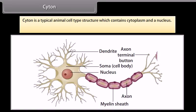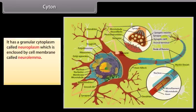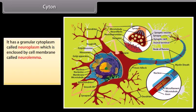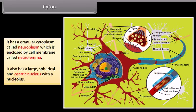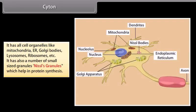The cytone is a typical animal cell-type structure which contains cytoplasm and a nucleus. It is spherical in shape and about 4 to 135 micrometers. It has granular cytoplasm called neuroplasm, enclosed by a cell membrane called the neurolemma. It has a large spherical centric nucleus, and all cell organelles like mitochondria, ER, Golgi bodies, lysosomes, and ribosomes. It also has small-sized granules called Nissl's granules, which help in protein synthesis.